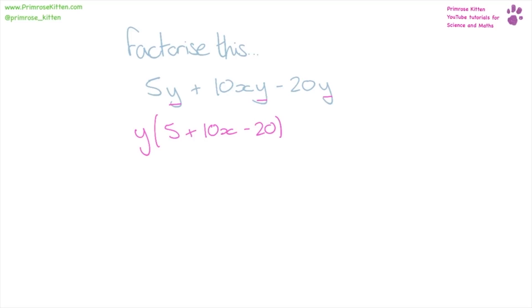Now we can see that 5, 10, and 20 also have something in common, and that is 5. So we can now take 5 outside the brackets and put it next to the y.